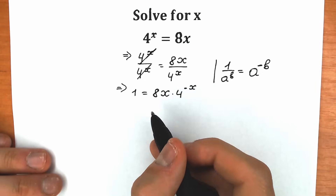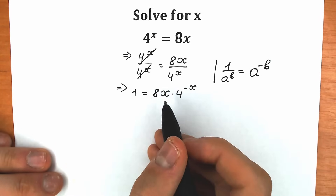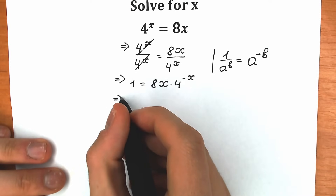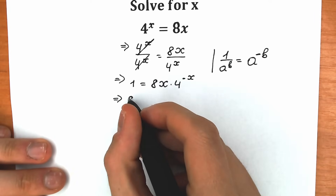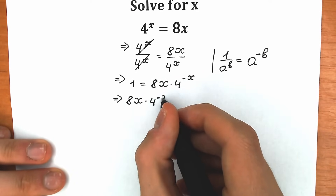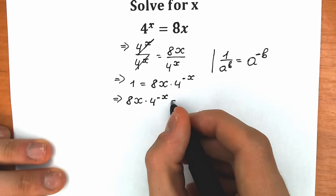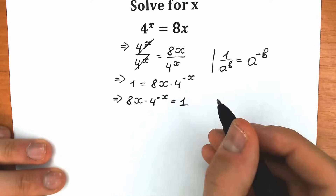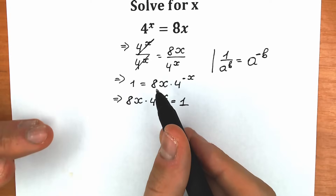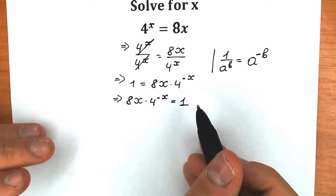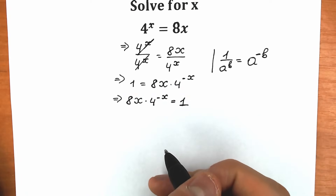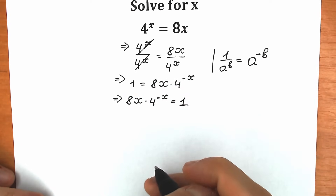Let's change position, because we prefer 1 on the right side. So we have 8x times 4 to the power minus x equal to 1.